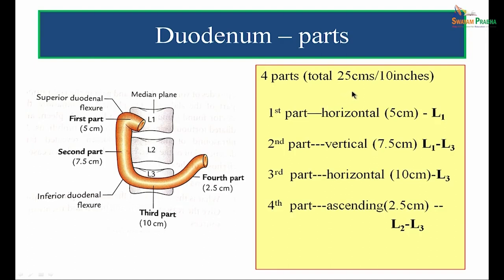The second part is vertical, measuring 7.5 centimeters, extending from L1 to L3 vertebra. The third part is horizontal, measuring 10 centimeters, lies at the level of L3 vertebra, extending from the inferior duodenal flexure — the bend formed between the second and third parts — going over to the junction of L2 and L3 vertebra. The fourth part is the ascending part, measuring 2.5 centimeters, and continues as the jejunum.